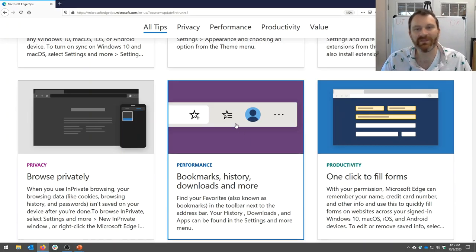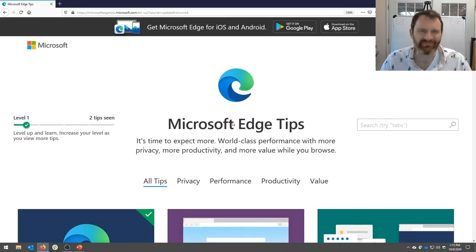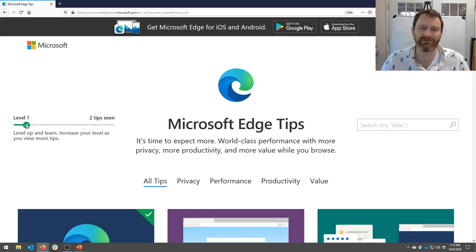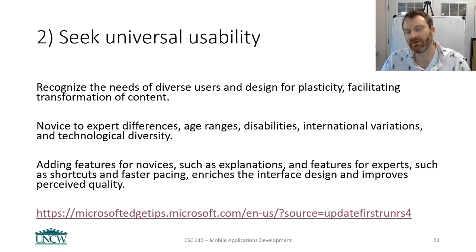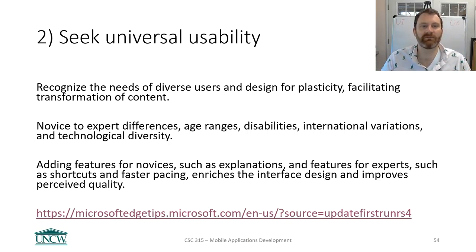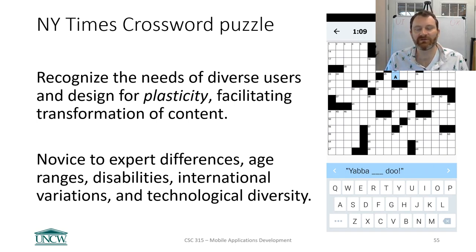It was a good idea to show the novice some things, but 46 really? The takeaway is: you're going to have a variety of users — experts, novices, young, old, people who can see and people who can't. You want to try and design around their needs, though you're not always going to be able to do that. Plasticity means recognizing diverse needs of users and facilitating transformation of content.